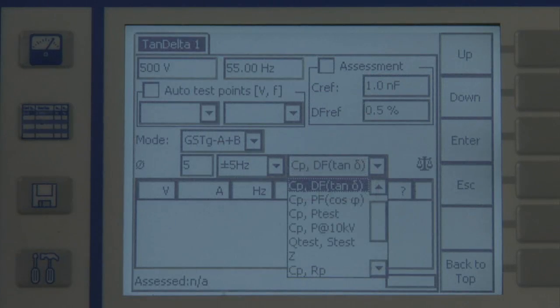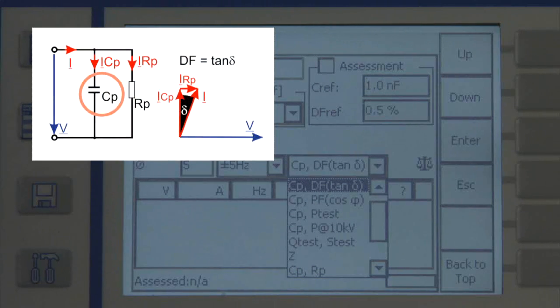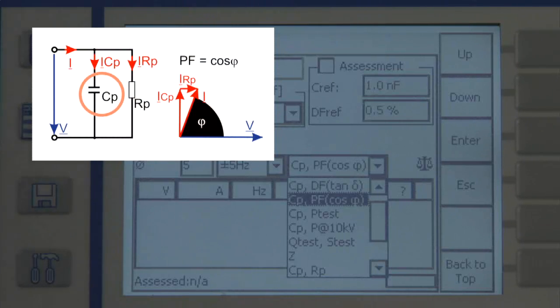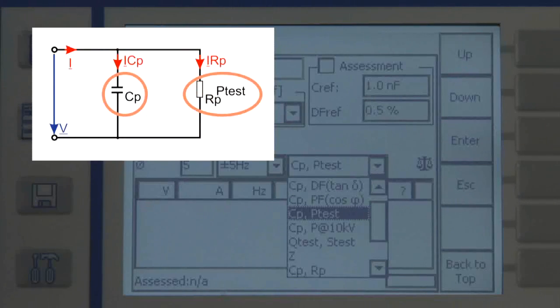The measurement result can be displayed in different ways: with capacitance and dissipation factor tangent delta, as capacitance and power factor cosine phi, as real power and cosine phi,